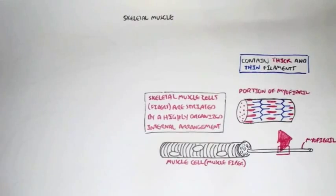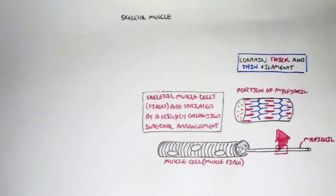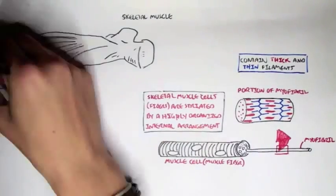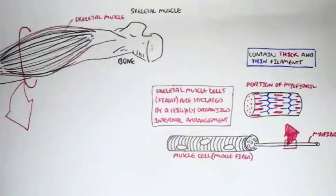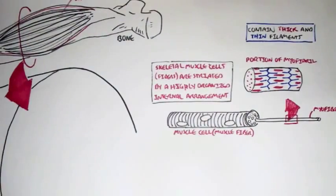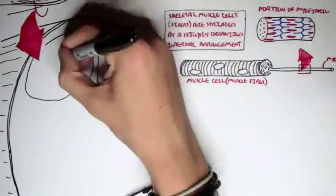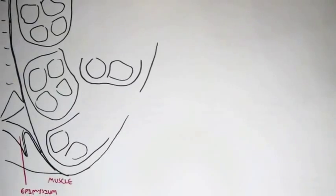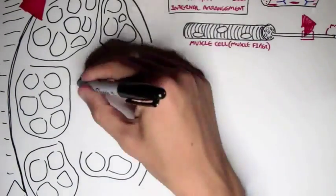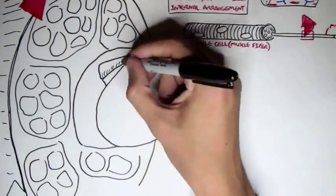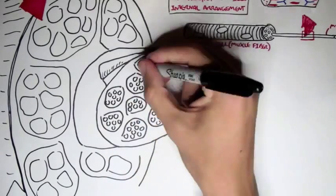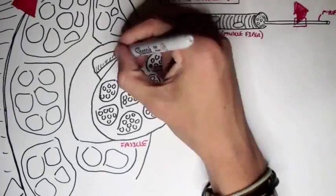The muscle fiber, the muscle cell, is actually part of a bigger organized structure. If we look at this bone and a skeletal muscle which attaches on it, and we cut a cross-section of skeletal muscle, we have the muscle as an organ. The muscle contains different portions, and it has an outer connective tissue layer known as the epimysium. If we take one of these portions of the muscle, it is known as a fascicle. The fascicle also contains other internal structures, and its outer connective membrane tissue is known as the perimysium.